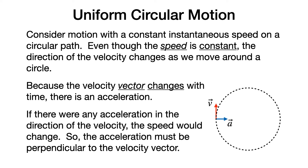If there were any acceleration in the direction of the velocity, the speed would change. We know this from considering motion under a constant acceleration in one dimension — if there is an acceleration in the direction of the velocity, then the velocity would change with time. Since the velocity has a constant magnitude, there is no acceleration in the direction of the velocity. So the acceleration must be perpendicular to the velocity vector always.